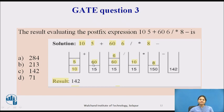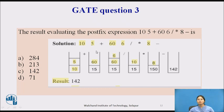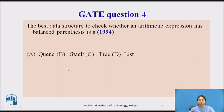Next, 60 is pushed onto the stack, then 6 is pushed. We encounter the division operator: 60 divided by 6 equals 10, so 10 is pushed. After that we have multiplication: 15 multiplied by 10 equals 150, which is pushed. Then 8 is pushed, and finally we have the minus operator: 150 minus 8 equals 142. So the correct answer is 142.